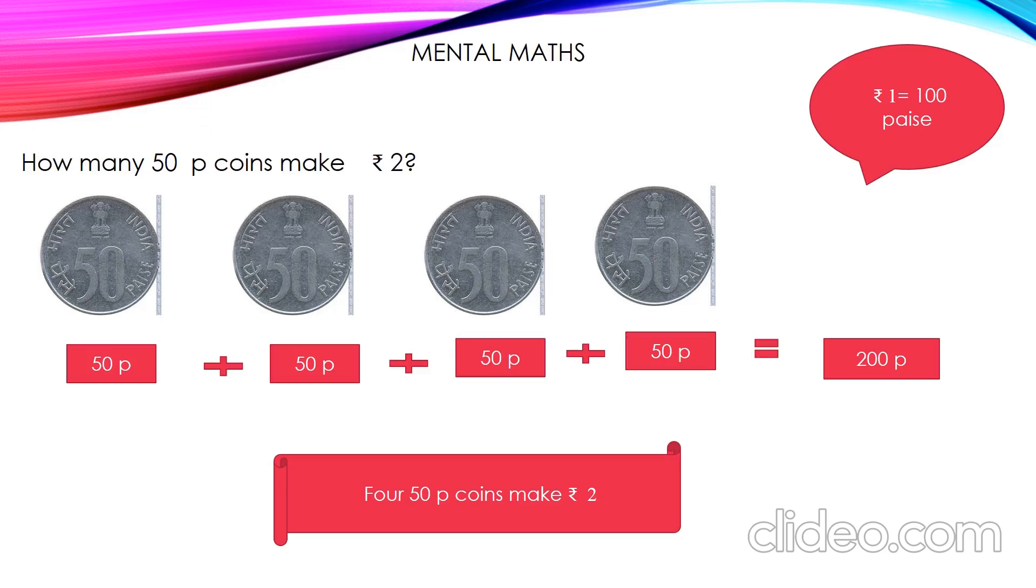Let's see a few mental math sums in this money chapter. How many 50 paise coins make 2 rupees? Let's see. 50 paise. And remember, we all know that 1 rupee is nothing but 100 paise. Let's see. 50 paise plus 50 paise which is 100. Is it equal to 200 paise? No. One more 50 paise. It is 150 paise. Plus 50 paise. It is 200 paise. So, how many 50 paise coins we need to make 2 rupees? We need 1, 2, 3, 4. So, 4, 50 paise coins make 2 rupees.